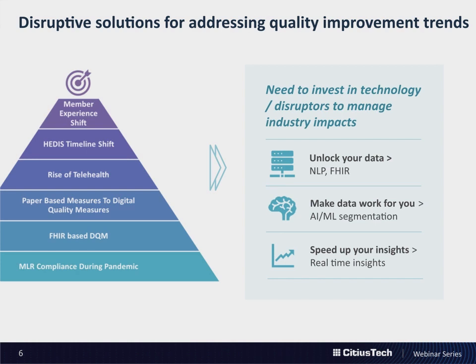One point regarding the MLR utilization piece: the utilization is not as low as it was in the June-July timeframe; utilization has ticked up. A lot of plans are reporting in the low to mid-80s. However, due to uncertainty of the next few months and how the winter is going to affect utilization across the board, it's still a pretty prevalent issue as far as how to address MLR shortcomings if it goes that route.